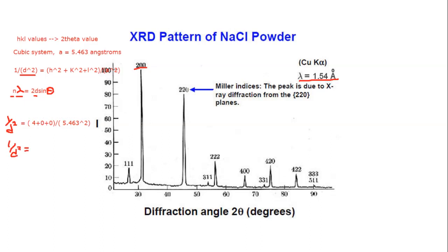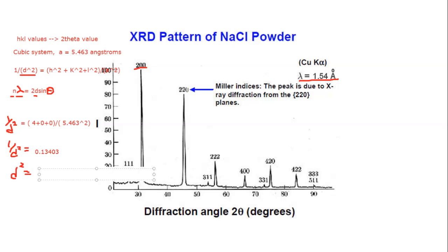So we get 1/d² equals 0.134. Now we're going to take the inverse to get d², and we get 7.461. So this is d squared; then we take the square root to find d.